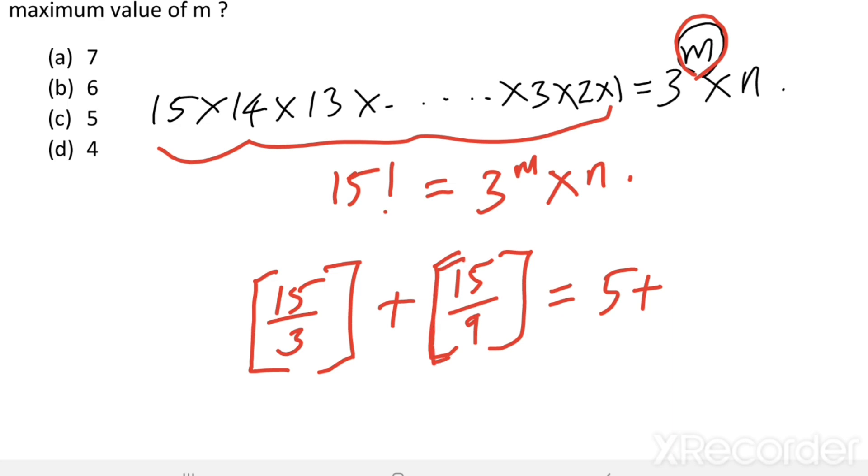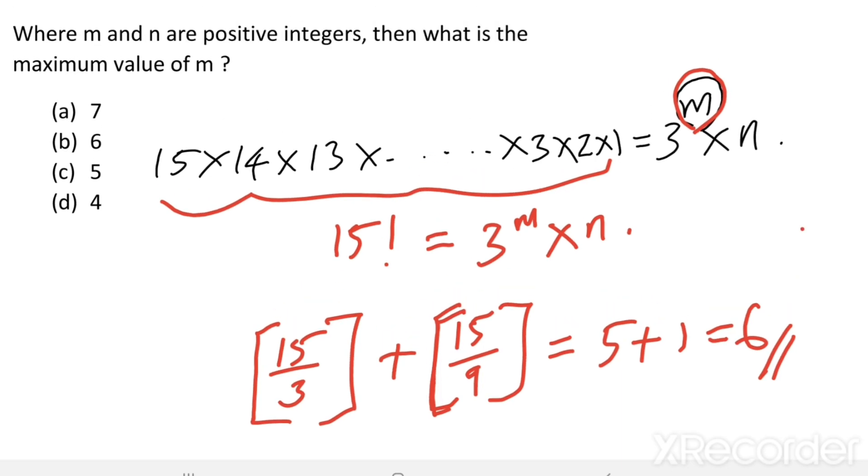So 5 + 1 = 6. The maximum value of m equals 6. Our answer is option b.